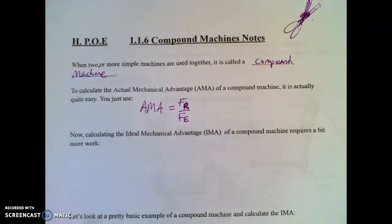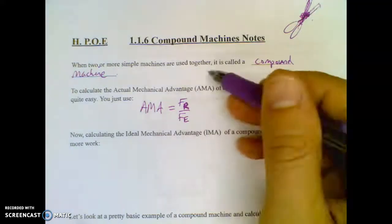Basically, if you have a bunch of machines in a row, like a Rube Goldberg kind of thing, if you just knew your force that went in and your force at the other end, then you could calculate your actual mechanical advantage.